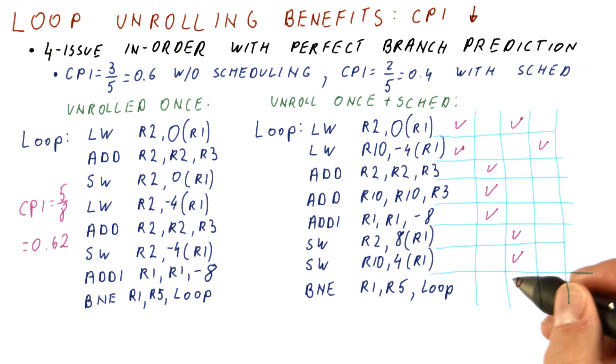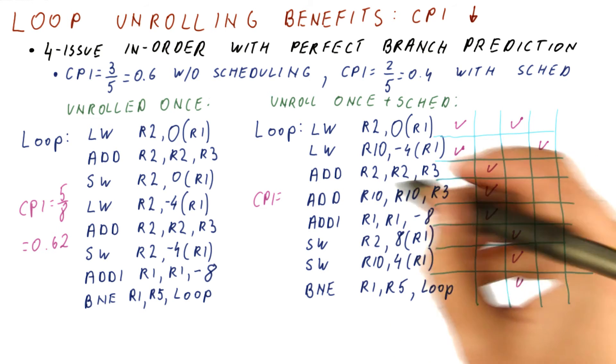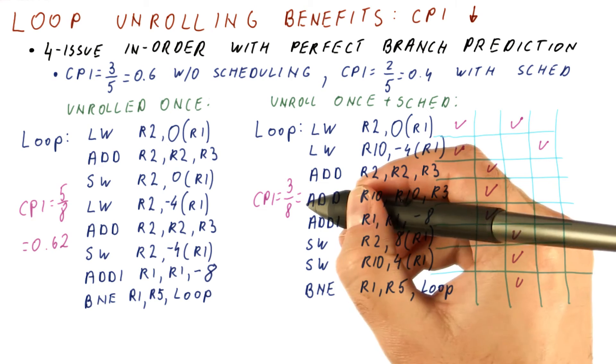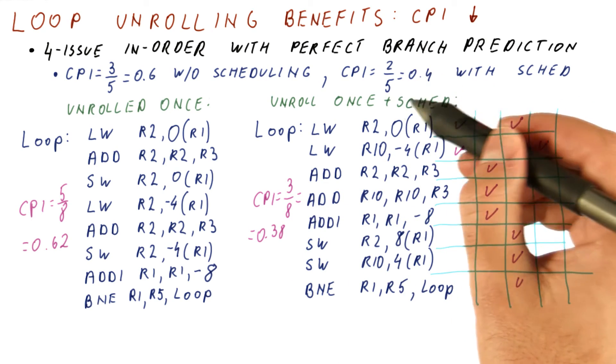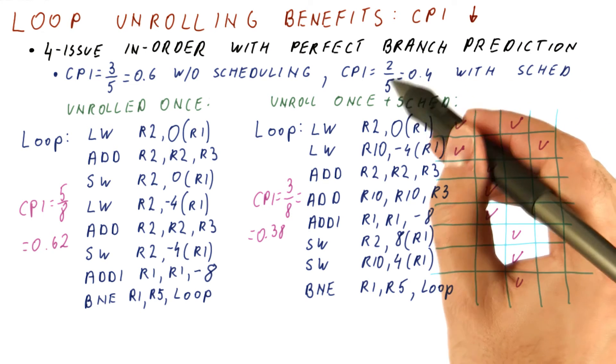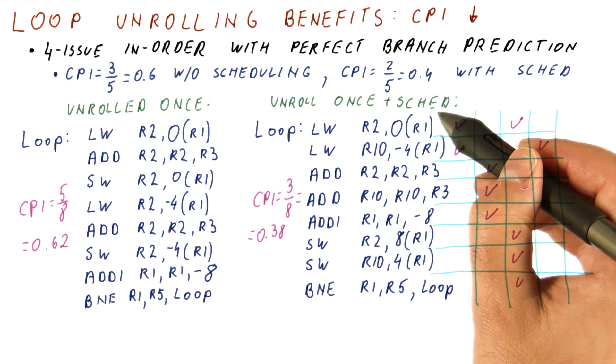The three adds, and so on. So overall, it took us now three cycles to do eight instructions, which gives us a CPI of 0.38. Slightly better than the scheduled CPI for the loop that we didn't unroll.